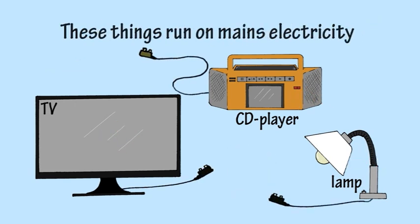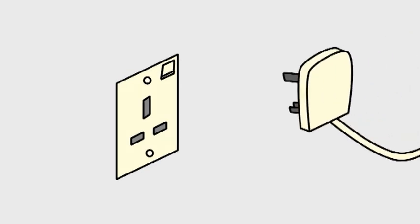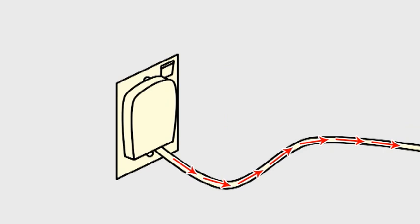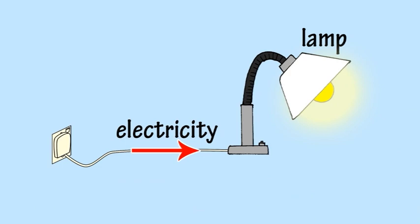The lamp, TV and CD player are electrical appliances that work by being connected to mains electricity. This is electricity supplied to your house that comes from sockets in the wall. The appliances are plugged in and the electricity travels along a cord to the appliance to make it work.